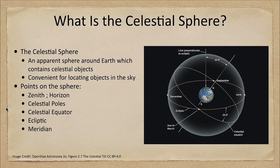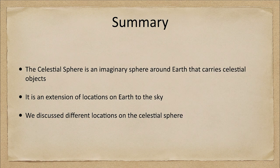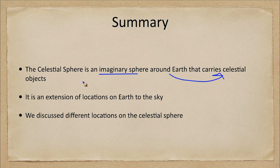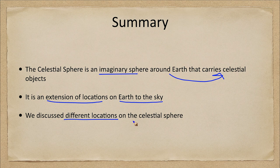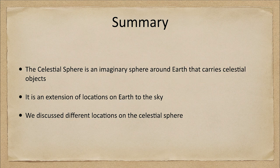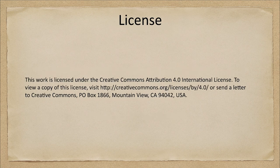To summarize, the celestial sphere is an imaginary sphere around Earth that seems to carry the celestial objects. It is really an extension of locations on Earth into the sky, and we looked at some of the different locations on the celestial sphere and discussed those. That concludes this special topic on the celestial sphere. We'll be back again next week for another special topic in astronomy — until then, have a great day everyone and I will see you in class.